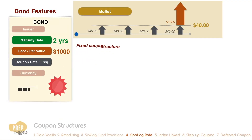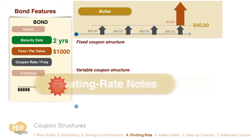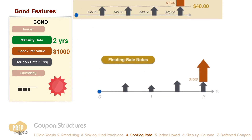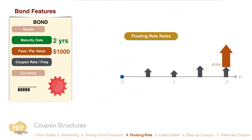Some bonds pay variable interest that depends on a current market rate of interest. Such bonds are called floating rate notes, or floaters. Floating rate notes tend to be structured such that there is a specific market rate of interest, also known as the reference rate. For example, we specify this bond to have the six-month LIBOR as the reference rate.